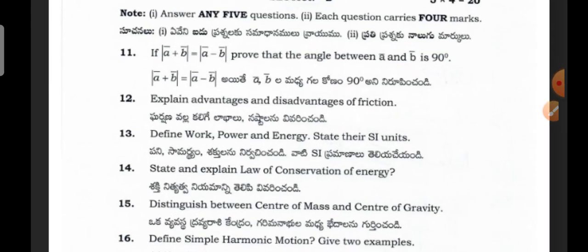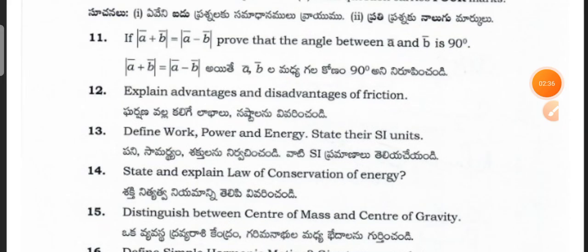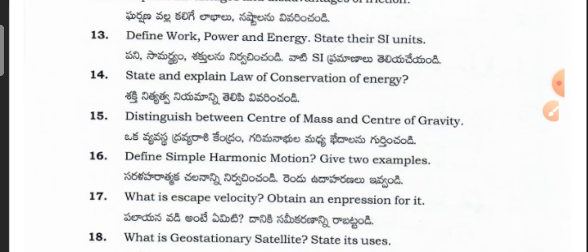This is the 11th question. The 12th one is: explain the advantages and disadvantages of friction. Differentiate work, power, and energy and state their SI units.